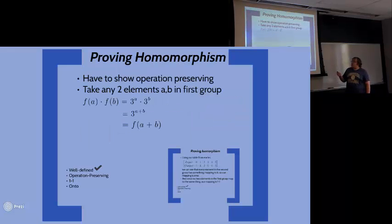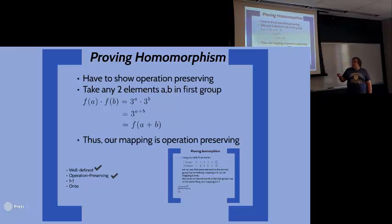Now to prove it's a homomorphism, you have to show it's operation preserving. Take two elements in Z6, A and B. f(A) × f(B) = 3^A × 3^B. By properties of exponents, that equals 3^(A+B), which equals f(A + B). That means our mapping is operation preserving, which means it is a homomorphism.